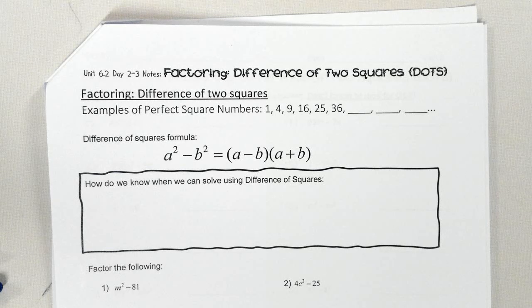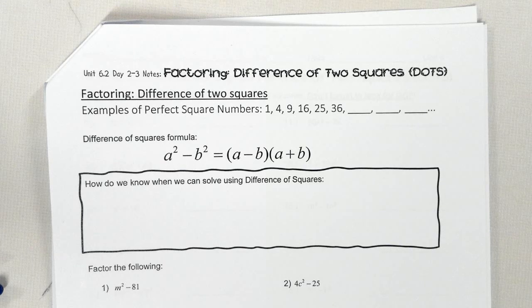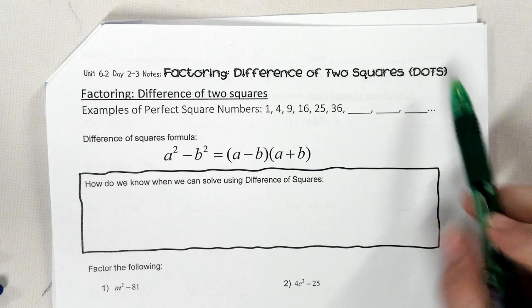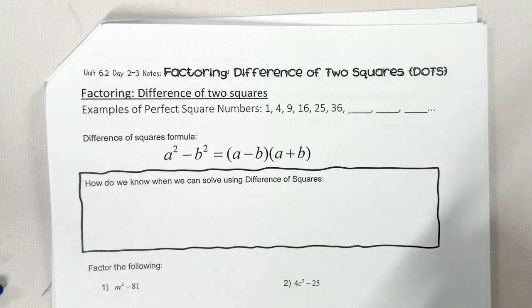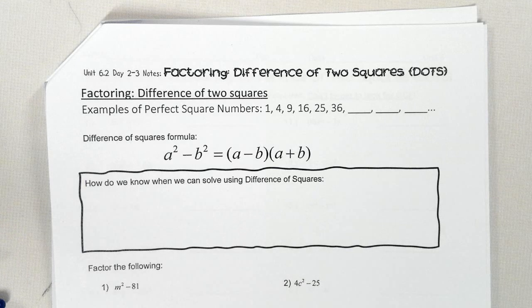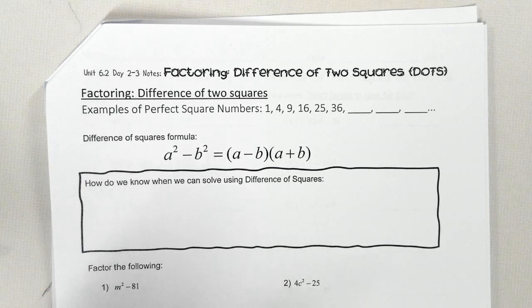We are doing difference of squares, or difference of two squares, which we also call DOTS. What does difference mean in math class? Subtract. So we are literally subtracting two squares.